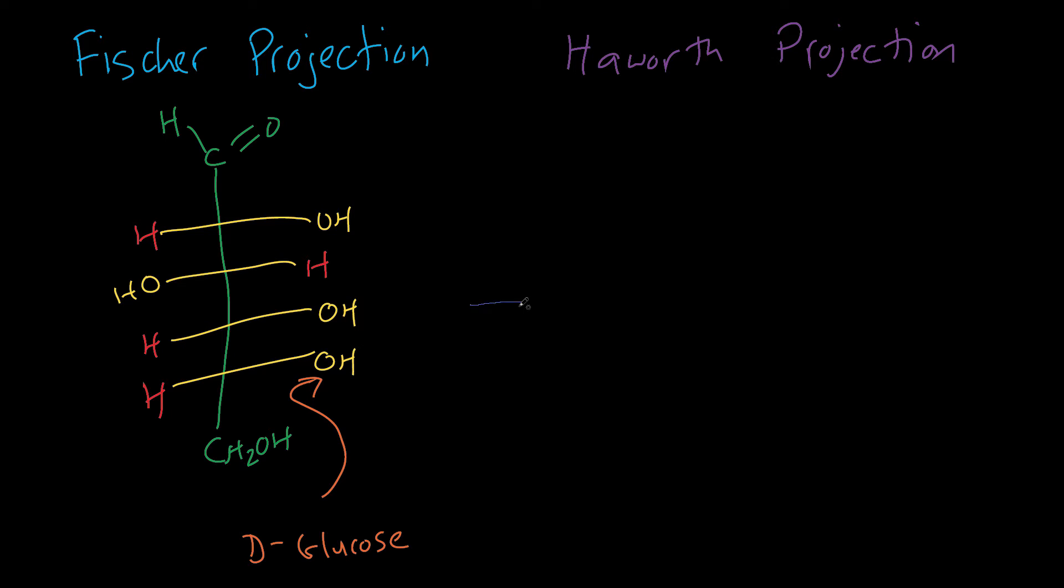If I took this open chain form and drew it from a different perspective, for example as a Haworth projection, what I'm going to do first is just draw that last CH2OH, and then the carbon backbone with four chiral centers, and then the aldehyde of course at the end.